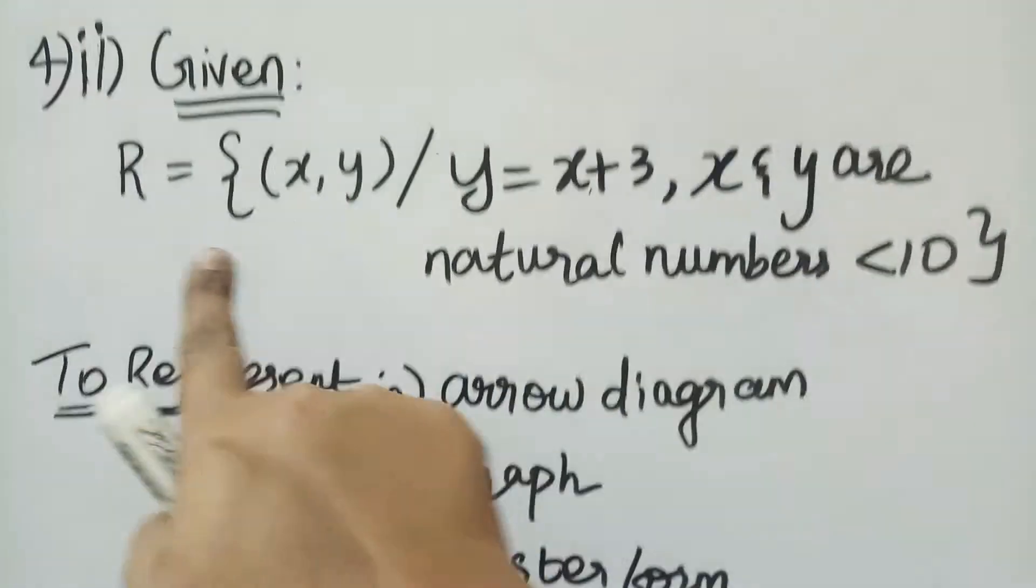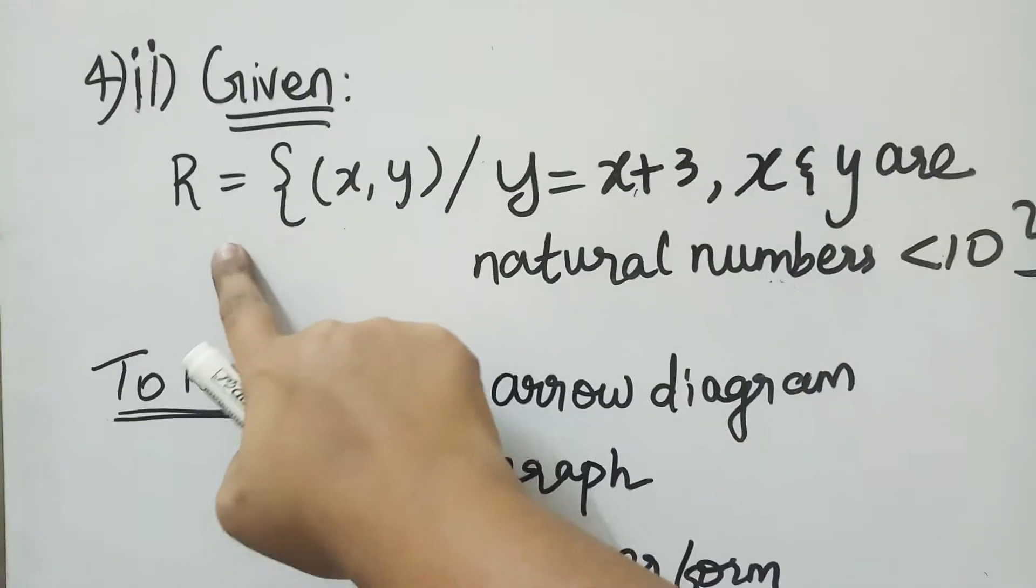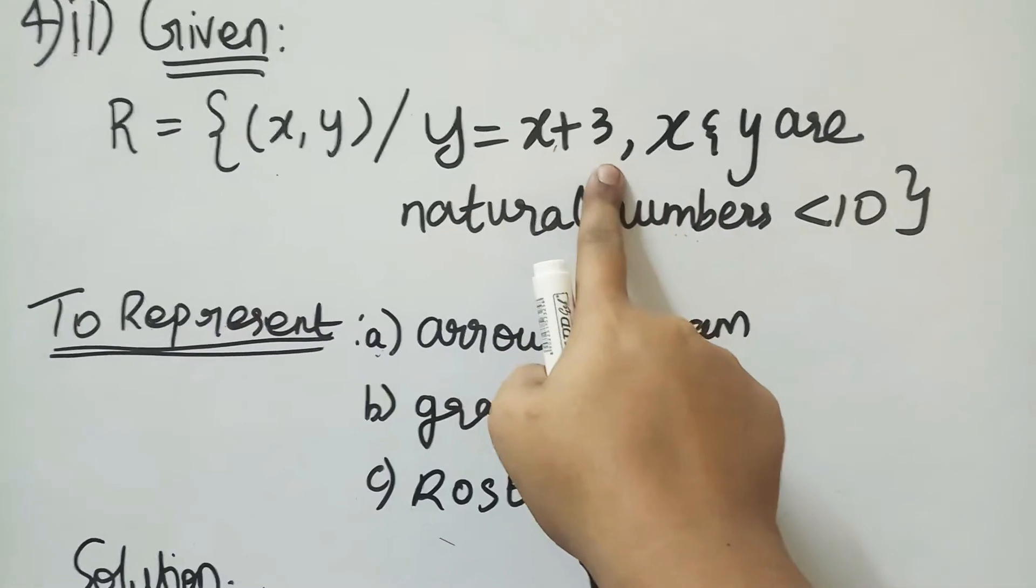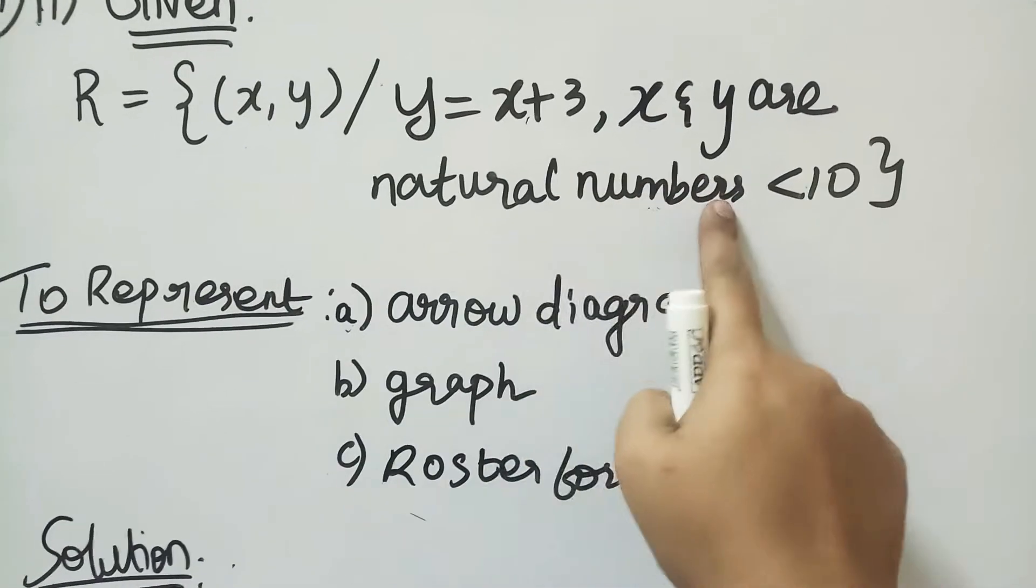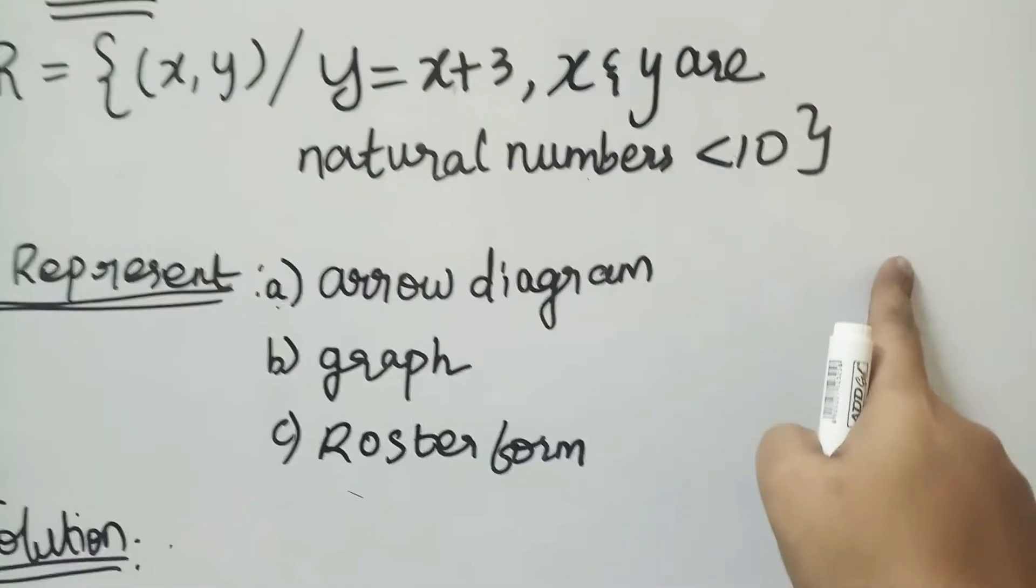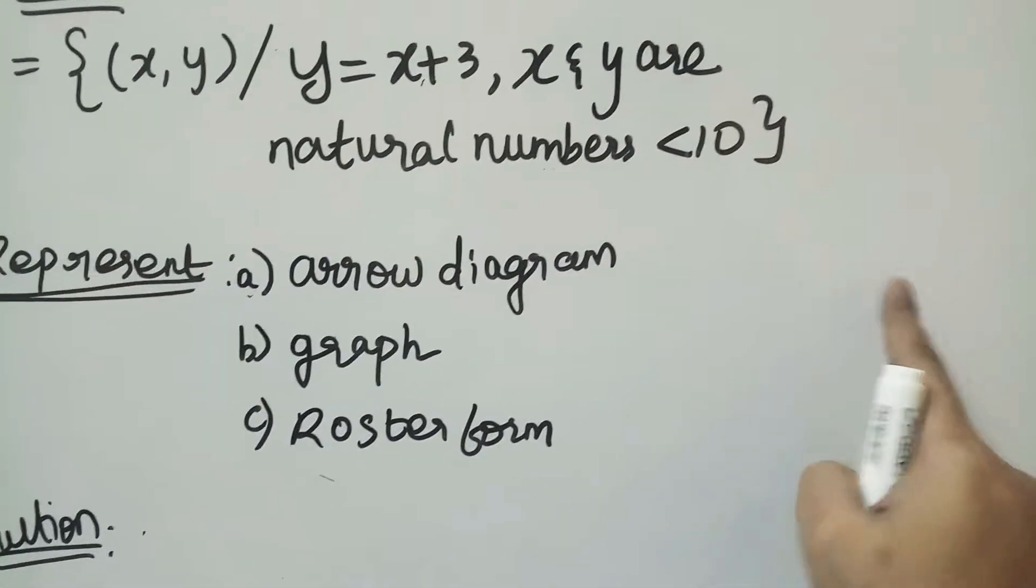So again, first subdivision, we have a relation in the second subdivision such that y is equal to x plus 3, and x and y are natural numbers less than 10. Natural numbers are starting from 1, so in this case there are 9 numbers less than 10.